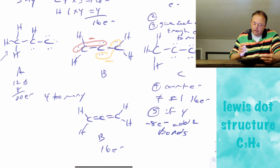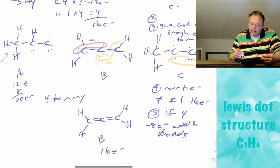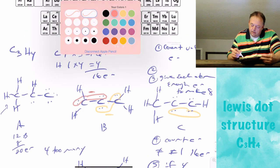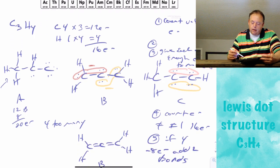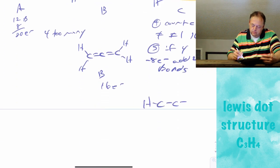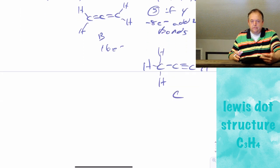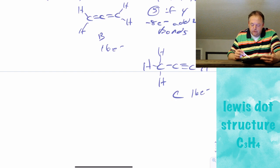For structure C, we get rid of 2 lone pair electrons and add a bond between 2 carbons, then get rid of 4 more electrons and add another bond — removing 8 non-bonded electrons and adding 2 bonds total. Structure C also has 8 bonds and 16 electrons with no non-bonded electrons. Each carbon has 4 bonds and 8 electrons. This gives what's known as a triple bond.